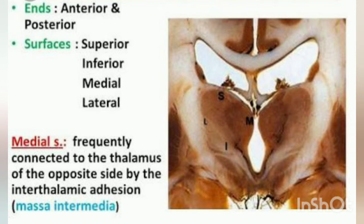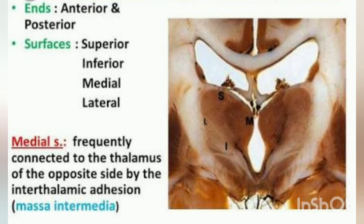The thalamus has superior, inferior, medial, and lateral surfaces. The superior surface is divided into a lateral ventricular part and a medial extraventricular part. The lateral ventricular part forms the floor of the central part of the lateral ventricle, and the medial extraventricular part is covered by the tela choroidea of the third ventricle. The inferior surface rests on the subthalamus and hypothalamus. The medial surface forms the posterior superior part of the lateral wall of the third ventricle, and the lateral surface forms the medial boundary of the posterior limb of the internal capsule.